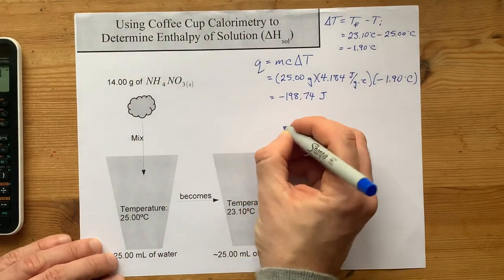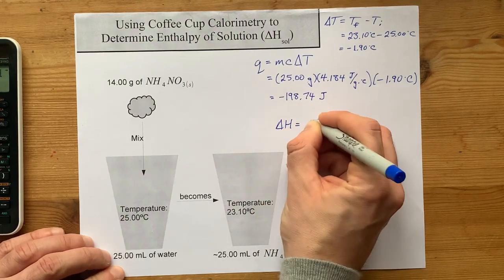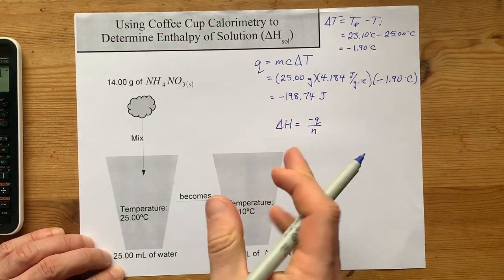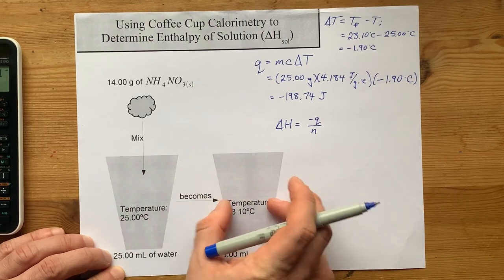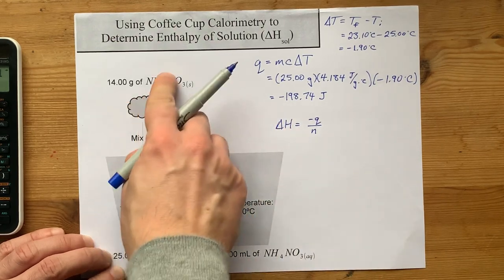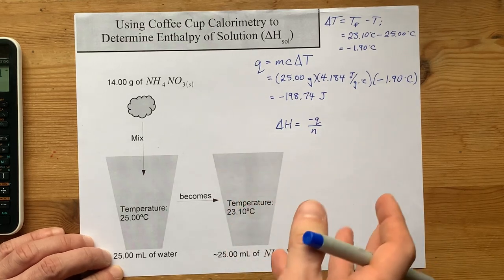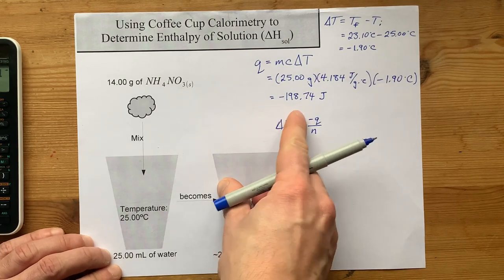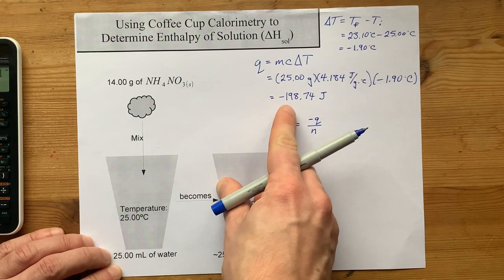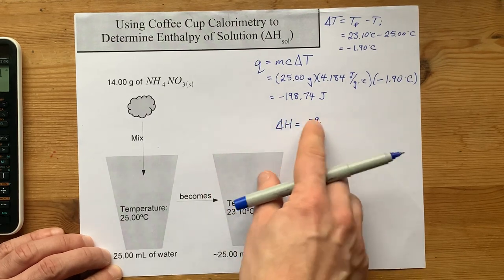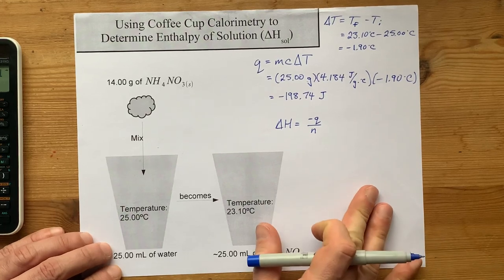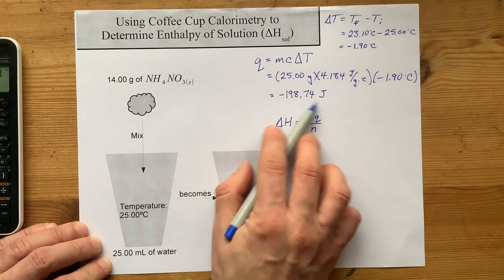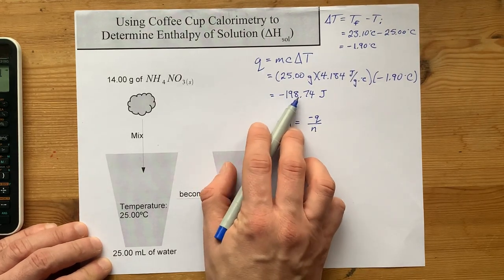Now, the formula I use for delta H is generally negative Q over N. That's because the Q you're measuring is usually for the surroundings, in this case the water. And the delta H you're calculating is for the thing that's actually doing the reacting, the system. Some teachers might want you to show that explicitly. Q system equals negative Q surroundings. Negative negative 198 cancels to positive 198. You'll see a shakedown in my calculation as well, but do what your teacher says. This Q is this Q here. The surroundings gave up 198 joules.